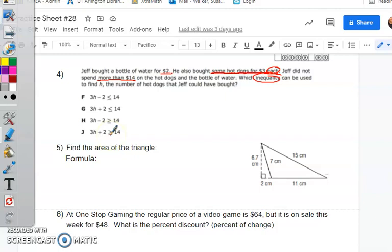He cannot spend more than $14, but he can spend $14. So when I look at this, the first ones that I would get rid of are this and this, because what this is saying is that this has to be less than or equal to 14. This can equal 14 or it can be less than 14. That's the best way that I know how to explain it.